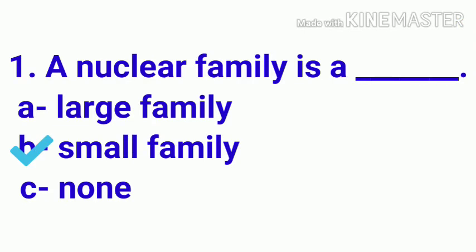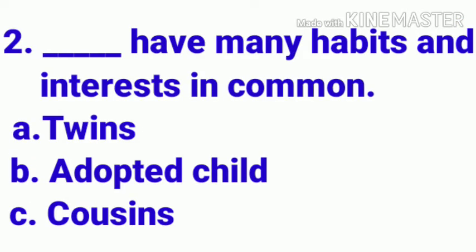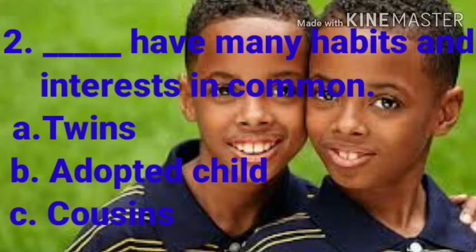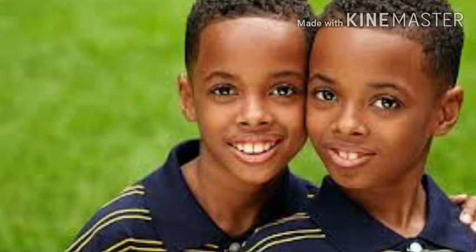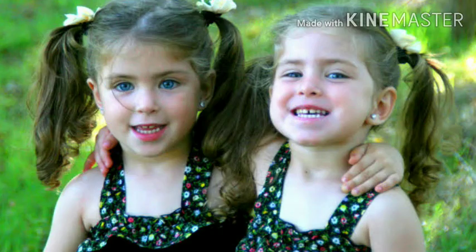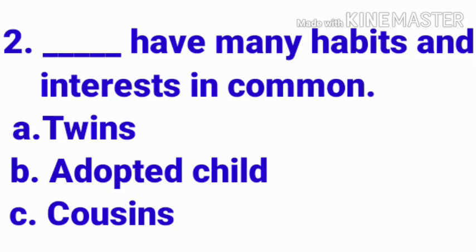Let's move to the second one: blank have many habits and interests in common. The options given here are twins, adopted child, and cousins. As we have learnt in the lesson, twins have many similarities, so we will choose twins as the correct option.